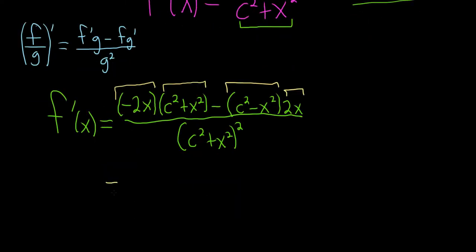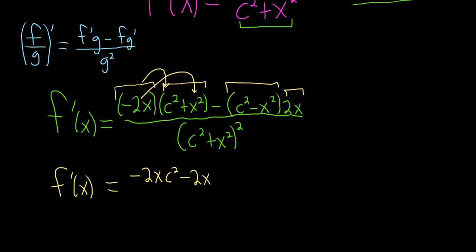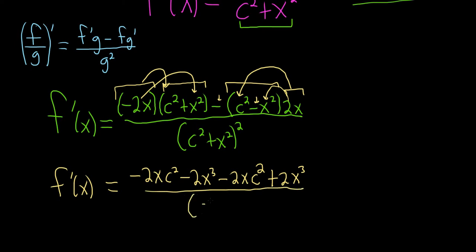Let's clean this up and distribute. f prime of x: negative 2x times c squared gives us negative 2x c squared. That term and the next will become negative 2x cubed. Then we distribute 2x to c squared along with the negative sign, giving negative 2x c squared. The last piece — 2x cubed with a negative and a negative — becomes positive 2x cubed. All divided by the bottom piece, c squared plus x squared, quantity squared.